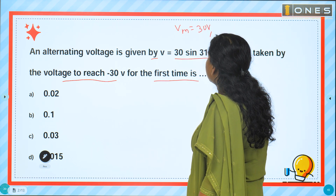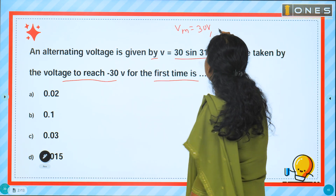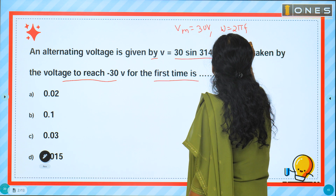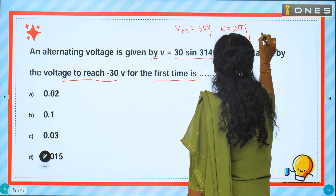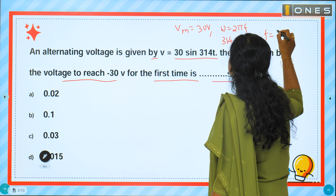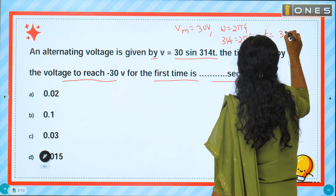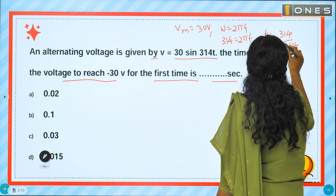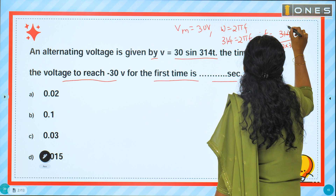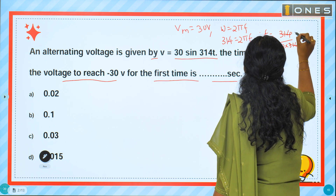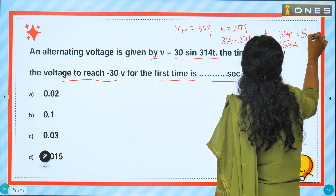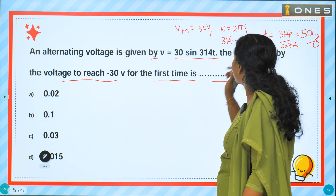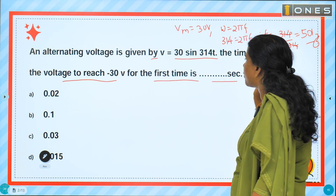Vm is equal to 30 volt. Omega equals 2πF. So 314 is equal to 2πF. Therefore, F equals 314 divided by 2 into 3.14, which is equal to 50 hertz. Time period T equals 1/F, so 1/(2×50) = 1/100; 100 × 3.14 gives T = 20 milliseconds.